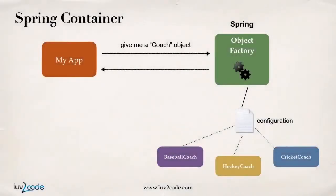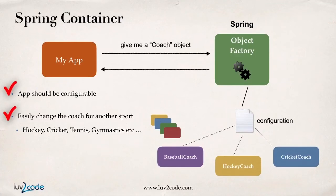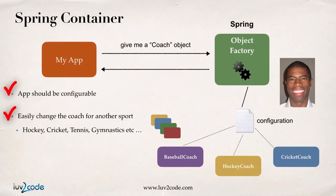Let me switch back to our slides. Now we've come full circle — our app meets the requirements. Our app is configurable based on the configuration file we just worked on, and we can easily change the coach for another sport by simply putting in a different coach implementation. Mission accomplished — we've met all the requirements from our manager. Thanks to Spring, our life is much easier. Good job — our first Spring app is up, running, and working.